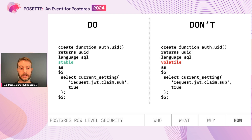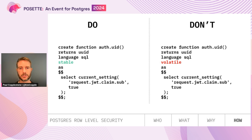Here's roughly what the auth.uid() function looks like inside Supabase — it returns the user ID from a JWT. Generally you want to write these functions as STABLE rather than VOLATILE. If a function is VOLATILE, the Postgres planner must evaluate it per row, calling it many times. If it's STABLE, it can be evaluated once at the start of the query, giving significant performance benefits.